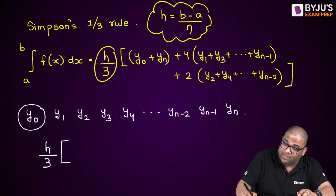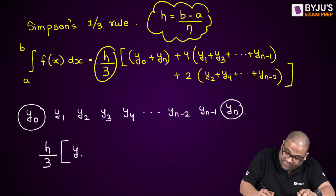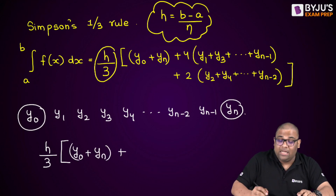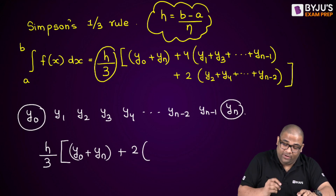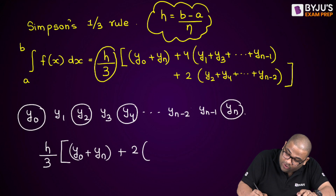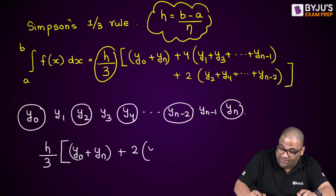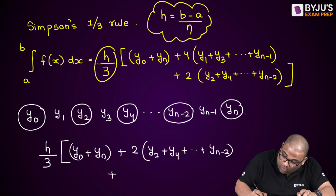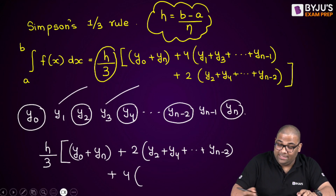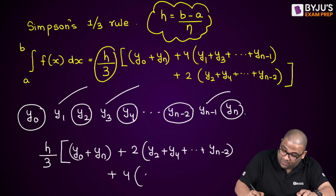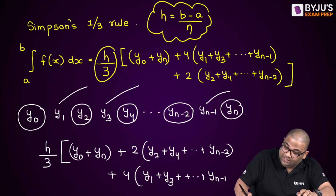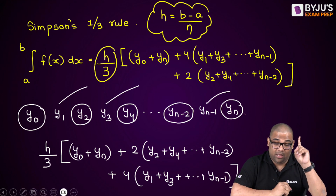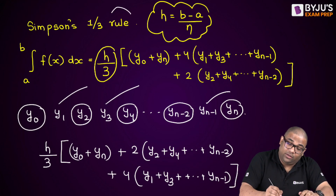After y₀ and yₙ, it is two times the even-indexed terms: y₂ + y₄ + ... + yₙ₋₂, plus four times the odd-indexed terms: y₁ + y₃ + y₅ + ... + yₙ₋₁. So the full formula is: h/3 × [y₀ + yₙ + 2(y₂ + y₄ + ... + yₙ₋₂) + 4(y₁ + y₃ + ... + yₙ₋₁)]. This is the key difference from the trapezoidal rule.